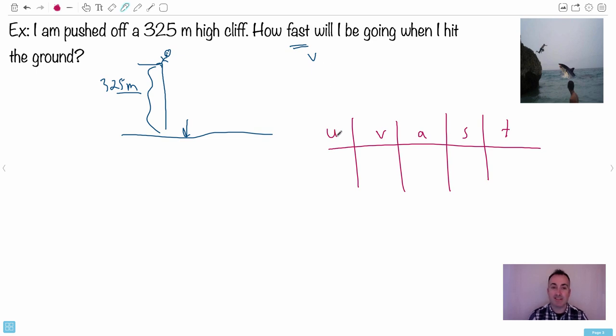In this case your initial speed, it's implied that it's zero because you're not told you're running or anything, it's a vertical situation. In this case your initial speed will be zero. V, your final speed, we don't know. In fact it's what we want. So I'm gonna put a star by that one.